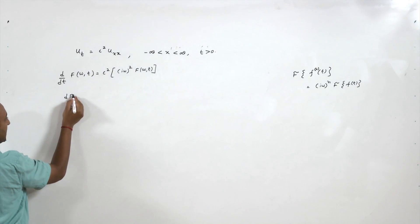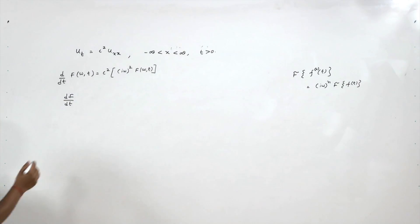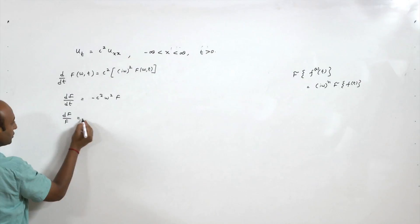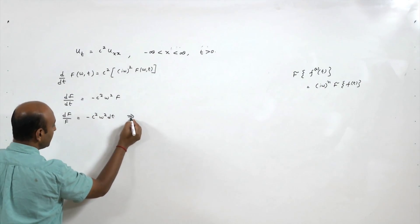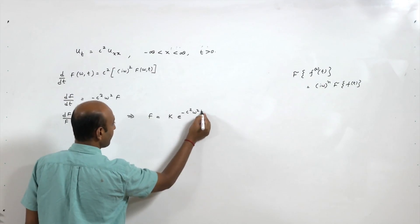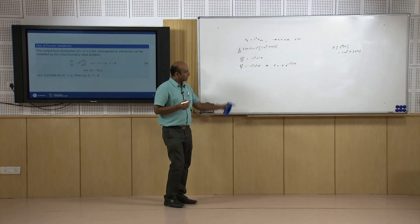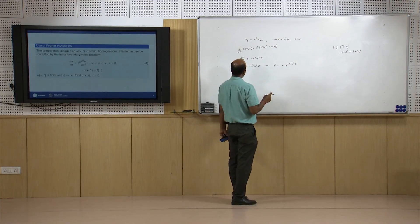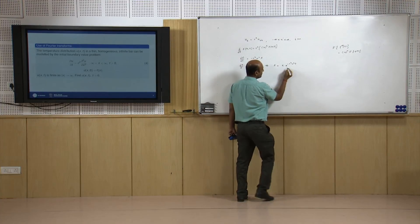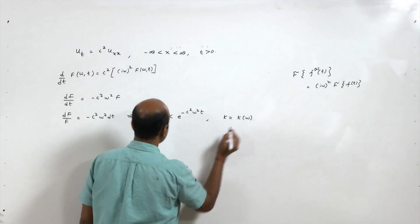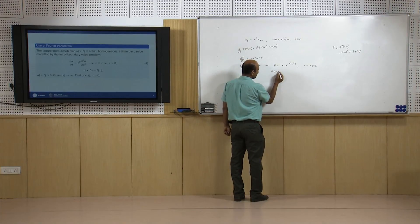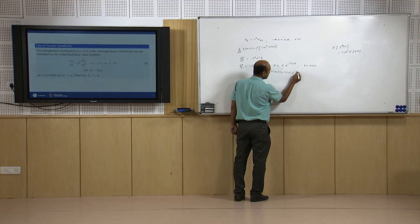This gives dF/dt = -c² ω² F. Separating variables: dF/F = -c² ω² dt. Integrating both sides gives F(ω,t) = K e^(-c²ω²t), where K is a function of ω, so F(ω,t) = K(ω) e^(-c²ω²t).